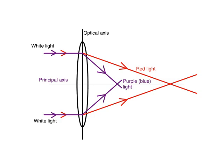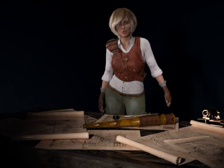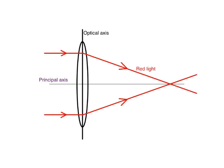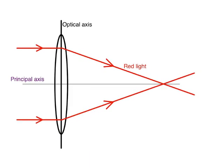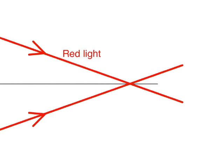Recalling how to draw chromatic aberration for a convex lens is a map-from-memory technique. We begin by drawing the convex lens, and then we draw the optical axis and principal axis. We will start with red light. We draw two rays parallel to the principal axis until they reach the optical axis, and then we draw the two rays crossing the principal axis some distance from the lens.